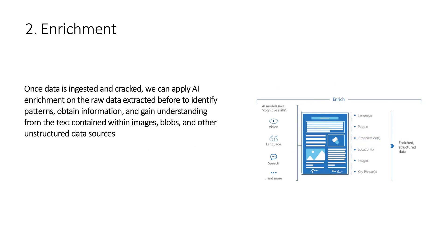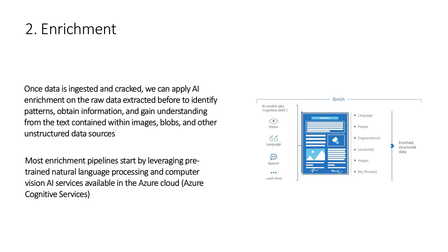The next step is enrichment. Once the data is ingested and cracked, we can apply AI enrichment on the raw data extracted before to identify patterns, obtain information, and gain understanding from the text contained within images, blobs, and other unstructured data sources. Once you collect data from many different kinds of documents — like images, text documents, database tables — you can apply AI enrichment using cognitive services in Azure to extract faces from images or extract sentiment from text. Most enrichment pipelines start by leveraging pre-trained natural language processing and computer vision AI services available in the Azure cloud — in this case, Azure Cognitive Services.